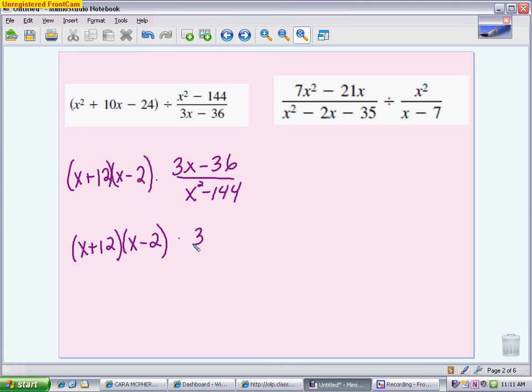This one, you can take out a 3 from the numerator. You're left with x minus 12. Denominator is difference of perfect squares. You get x plus 12, x minus 12. I'm going to cancel this x minus 12 with this x minus 12. I'm going to cancel this x plus 12 with this x plus 12, and I am left with 3 times x minus 2. You can leave it like that, or you could distribute the 3 through to give you 3x minus 6.